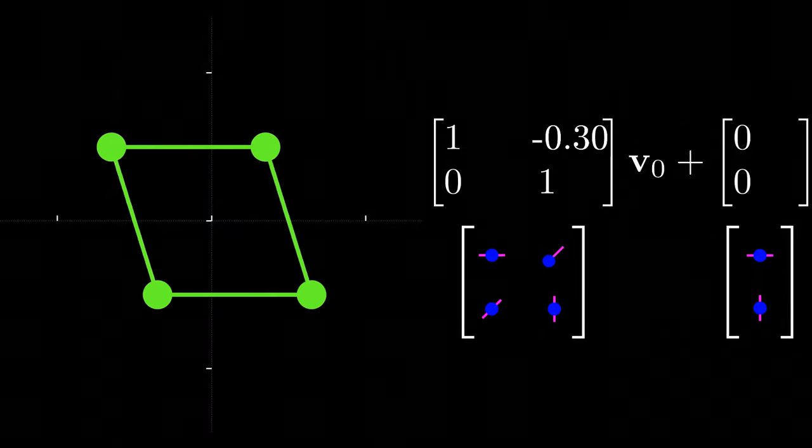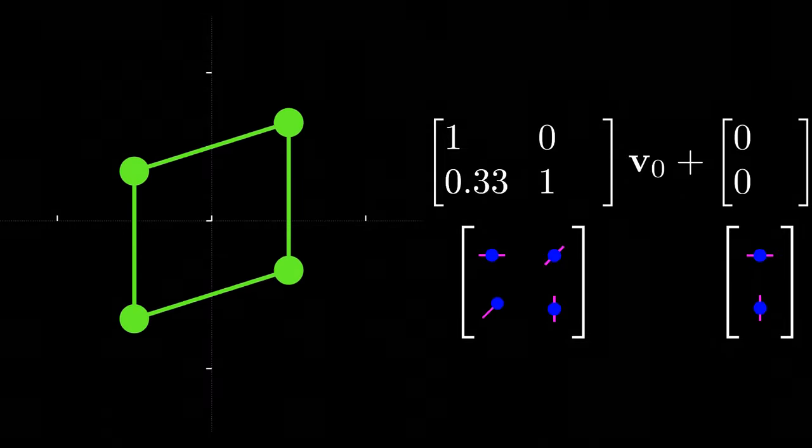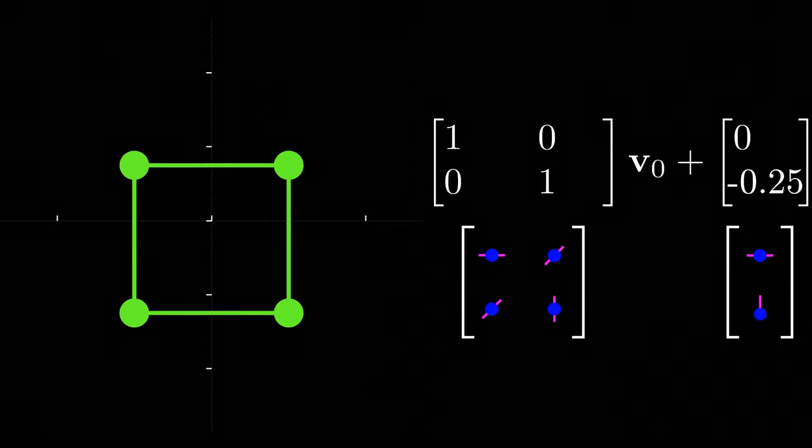The upper right hand dial corresponds to shearing along x, and the lower left dial corresponds to shearing along y. The last two dials correspond to translation along x and y.